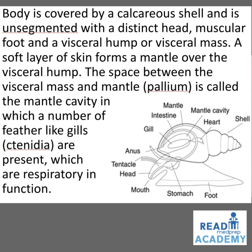A soft layer of skin forms a mantle over the visceral hump. The space between the visceral mass and the mantle (pallium) is called the mantle cavity, in which a number of feather-like gills called ctenidia are present, which are respiratory in function. On the right side you can see the image of a mollusc — the snail — which has a shell, heart, mantle cavity, mantle, intestines, gills, anus, tentacles around the mouth, and a head with a mouth leading into the stomach; it has a foot to hold the substrate.